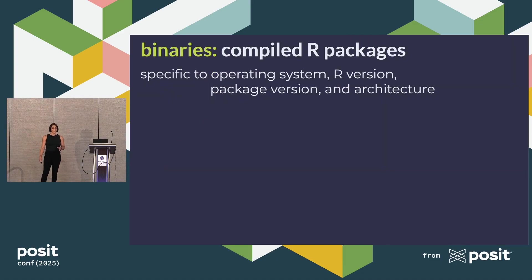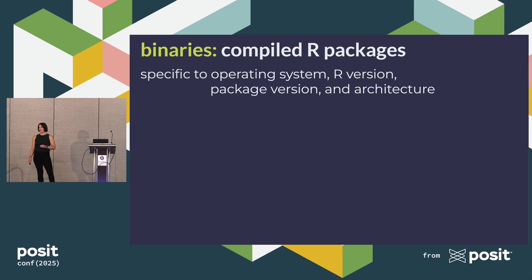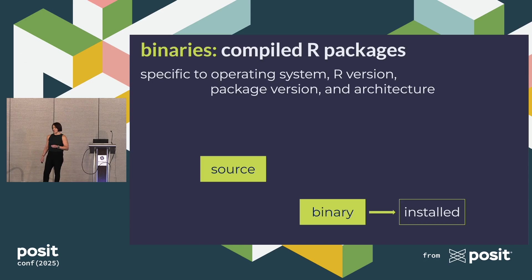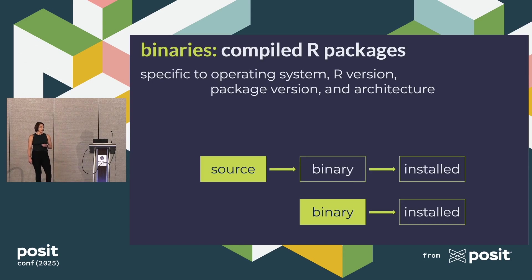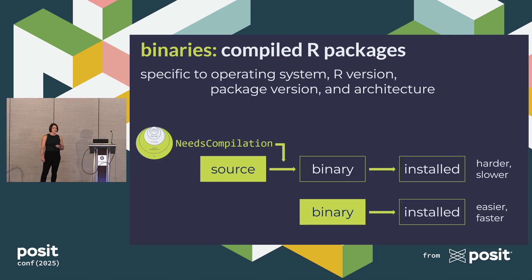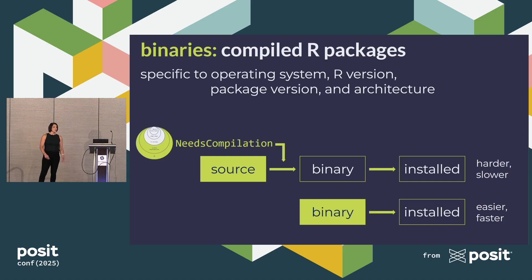Now we have to talk about binaries. Binaries are compiled R packages — very specific to your operating system, R version, package version, and architecture. Typically when we install packages, we either install from source or binary. If we start from binary, it's a straight shot to install. If we start from source, our machine has to compile it into a binary first. That 'needs compilation' step happens in between going from source to binary, which means installing from source is a harder and slower process, whereas installing from binary is easier and faster. The reason to do one over the other is simply the availability of binaries — they're not always available.